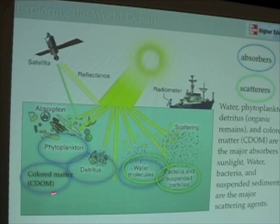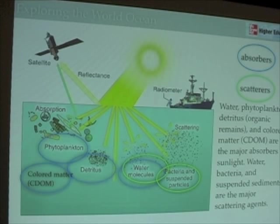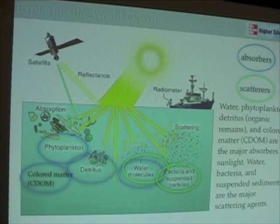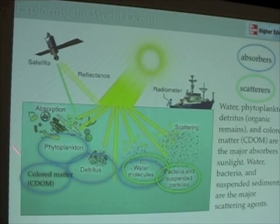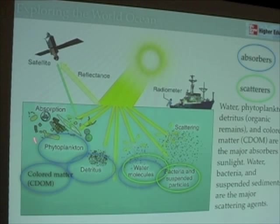CEDOM, or dissolved organic matter, is also going to absorb light. Remember the tea-colored water I showed you in chapter 5, coming out of that little creek on Vancouver Island. Detritus — just the bits and pieces of stuff that result from any organic processes, like fecal pellets or fish waste or anything left over from biological activity — may also absorb light as it penetrates the water column.